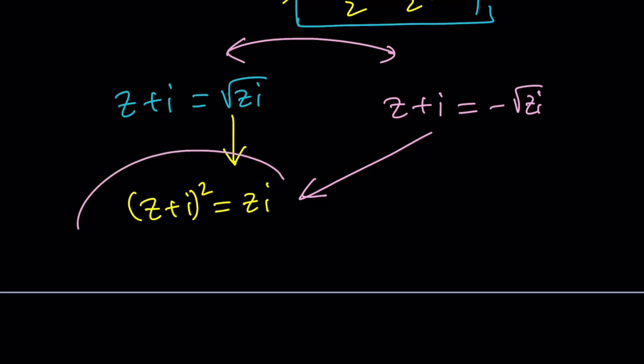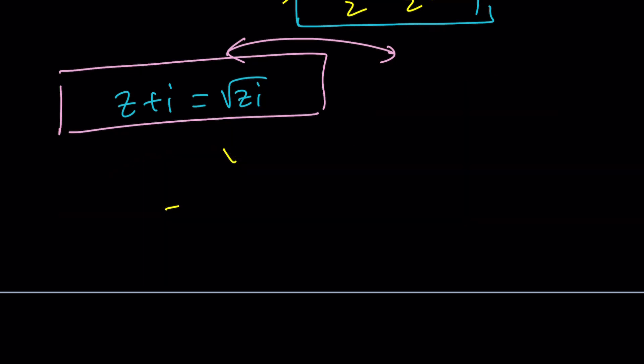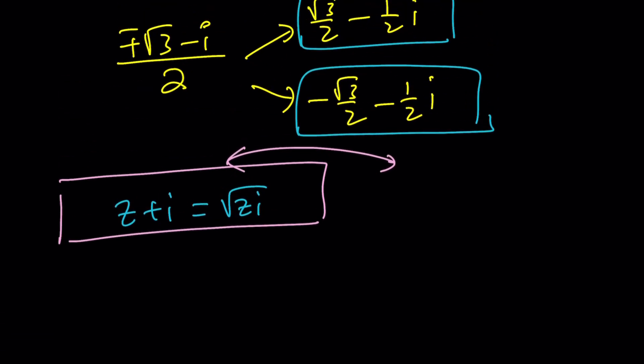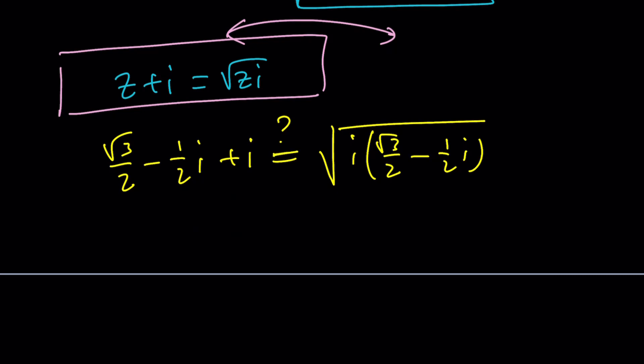Let's plug in our solutions into the original problem. Square root of 3 over 2 minus 1 half i plus i - is that equal to i times square root of 3 over 2 minus 1 half i? Let's simplify both sides. This gives root 3 over 2 plus 1 half i, and the right side gives negative 1 half i squared which is positive 1 half plus root 3 over 2 i.